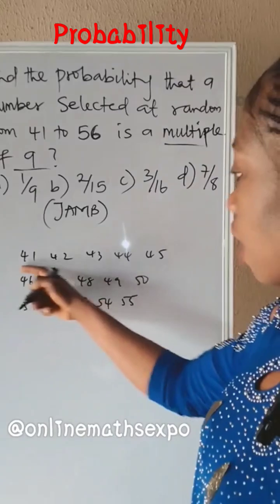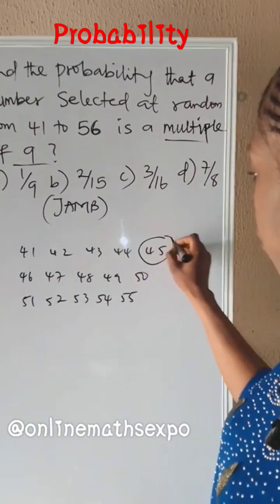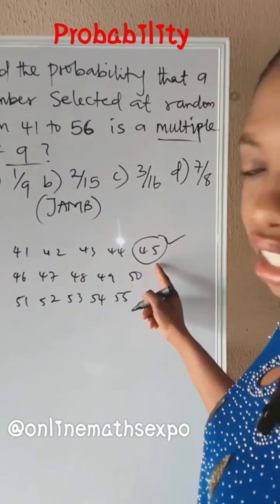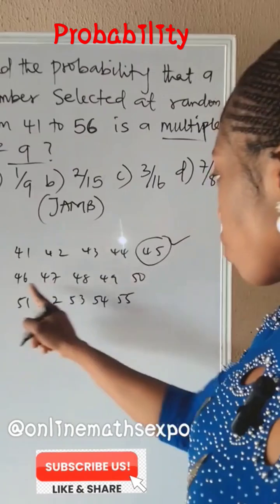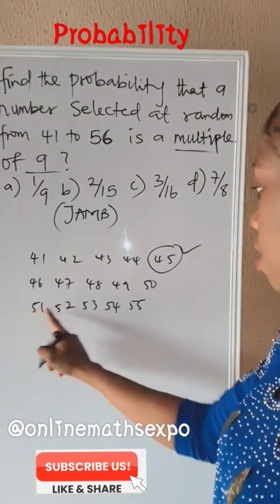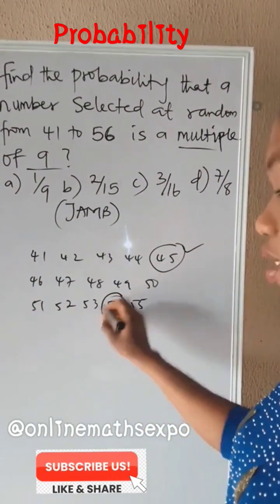Now, which number can 9 divide among these? 9 can divide 45. So the next number 9 can divide, we add 9 to it. We have 1, 2, 3, 4, 5, 6, 7, 8, 9. So the next is 54.